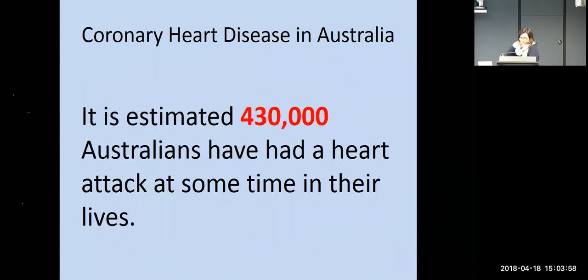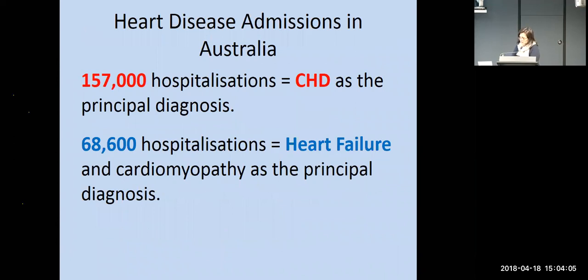If you compare people over 75 to those in a middle age group, prevalence is about nine times higher. In terms of how many Australians have ever had a heart attack, it's estimated at just over 400,000. In a typical recent year, about 150,000 people end up in hospital with coronary heart disease as the principal diagnosis, compared with just under 70,000 hospitalisations where heart failure is the primary diagnosis.